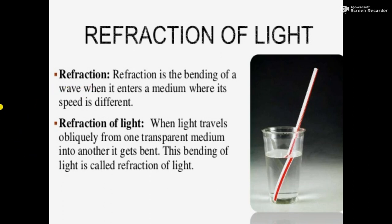Coming to our topic, refraction of light is possible only through transparent objects or media like air, water, or glass. When light travels obliquely from one transparent medium into another, it gets bent. This bending of light is called refraction of light. Obliquely means at an angle or slanting from one transparent medium to another.